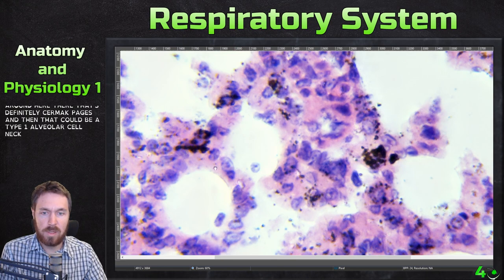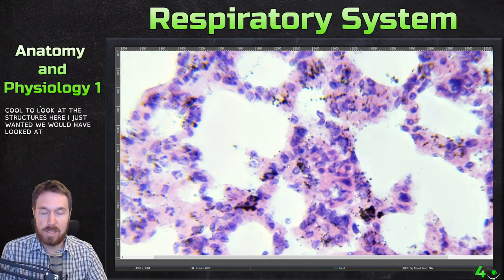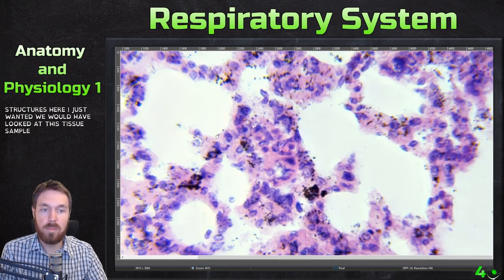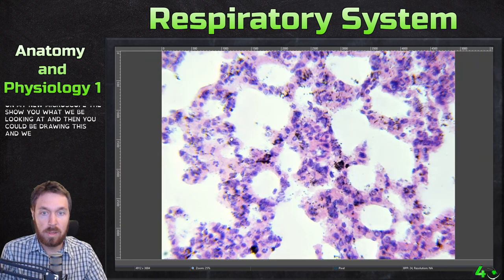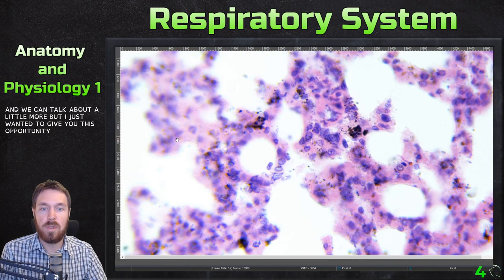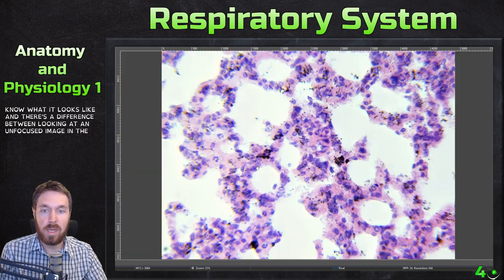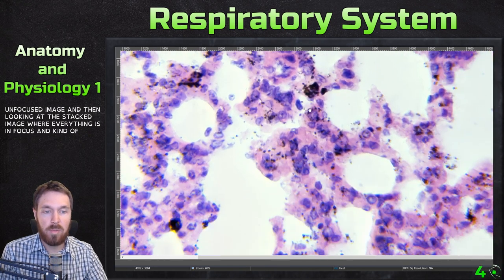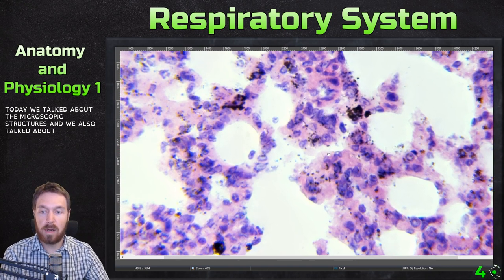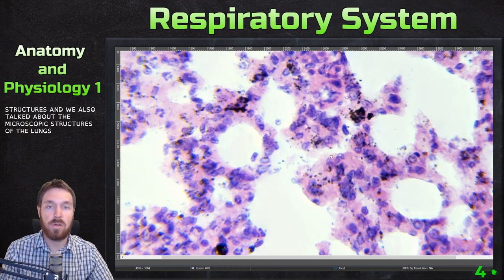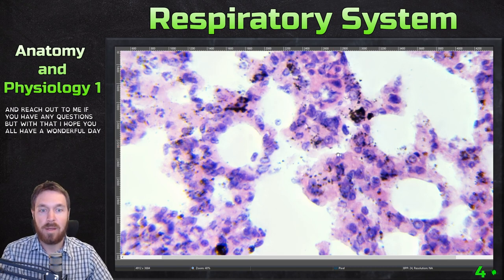Some cells without a nucleus are actually red blood cells moving through little capillaries. Those are definitely macrophages, that could be a type 1 alveolar cell, and that could be a type 2 alveolar cell. It's just cool to look at these structures. We would have looked at this tissue sample in the laboratory, but I wanted to show it here on my new microscope. That's the difference between an unfocused image and the stacked image where everything is in focus. That's all for today — we covered the microscopic and macroscopic structures of the lung. Look over this and the lecture videos, and reach out if you have any questions. Have a wonderful day!